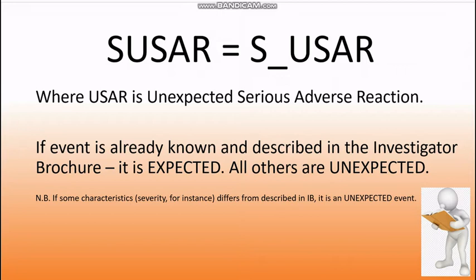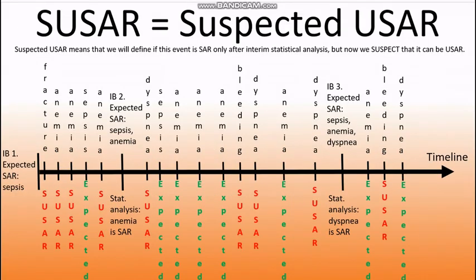We are just one step away from USAR to SUSAR. During the study, new adverse events, serious adverse events, adverse reactions, and serious adverse reactions are being registered on an ongoing basis. Before the statistical processing of all this data, it is impossible to clearly assess the dependence of a newly acquired serious adverse event on the administration of the investigational product. After all this information is processed — data from a large number of patients from different sites and countries merged and analyzed — we will be able to judge exactly whether this serious adverse event is systemic, how it relates to the patient's participation in the clinical trial, and accordingly, whether it is an unexpected serious adverse reaction.